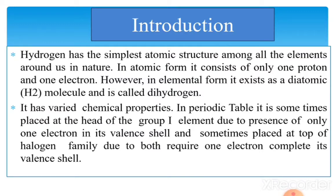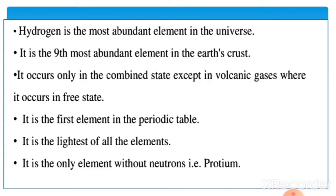Hydrogen has a variety of chemical properties. In the periodic table, it is sometimes placed at the head of group 1 due to having only one electron in its valence shell, and sometimes placed at the top of the halogen family because both require one electron to complete the valence shell. That's why the position of hydrogen varies — sometimes in group 1 (alkali elements) and sometimes in the halogen family.